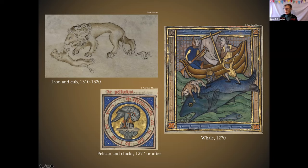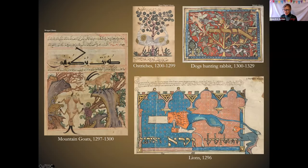We saw before how the pelican pierces its breast to revive its chicks with blood — from the pelican we are taught how Christ sacrificed his own blood to bring new life to us, his chicks. So bestiaries were enormously popular in Christian Europe, probably second only to the Bible in how many versions were written and how many languages they were translated into.